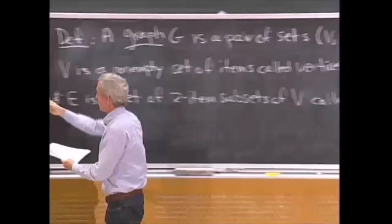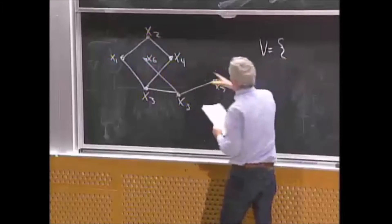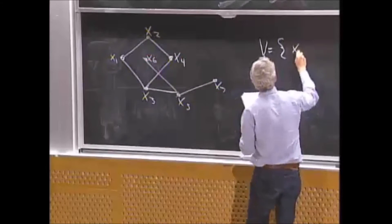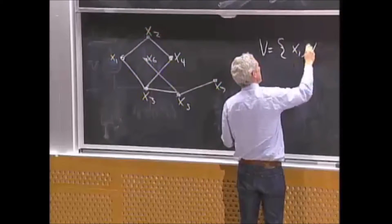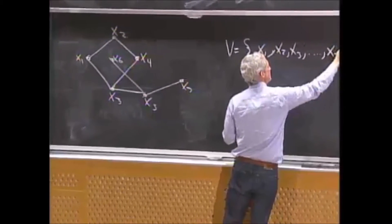So for example, over here in this picture, V is the set of nodes is x1, x2, x3, up to x7. That's the nodes.